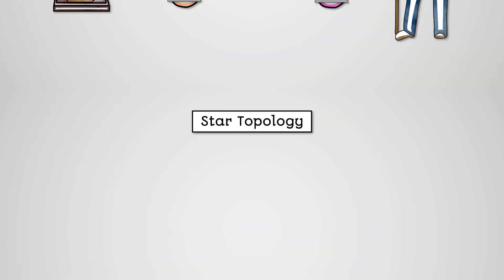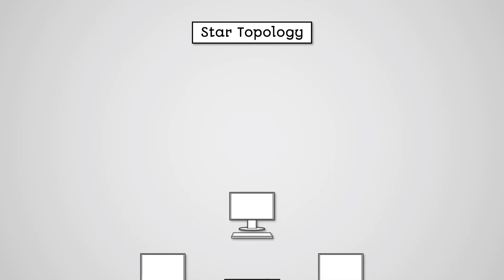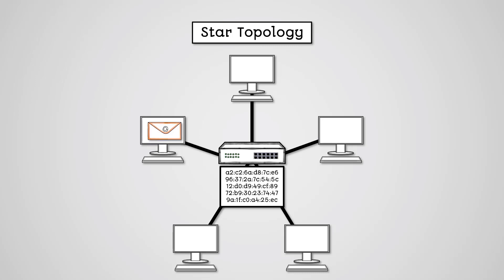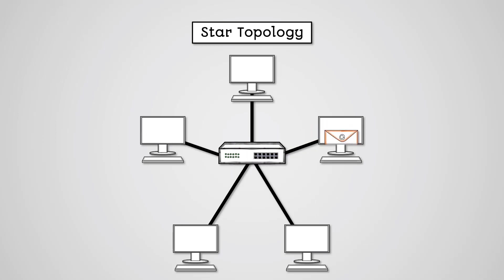A star topology is shaped like a star. You have a group of computers connected to a central switch. The switch has the MAC address of each computer connected to it. A message being transferred from one client to another must first travel to the switch, which will then use its list of MAC addresses to identify the recipient client and forward the message to that client device.